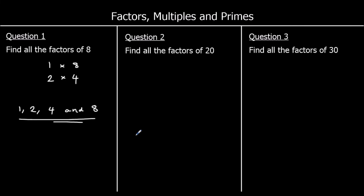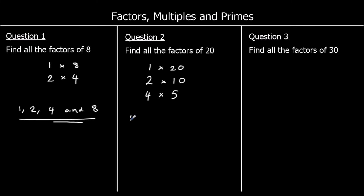Question 2: find all the factors of 20. So we've got 1 times 20, we've got 2 tens, it's not in the 3 times table, and we've got 4 fives. So that's all of them — the factors of 20 are 1, 2, 4, 5, 10, and 20.